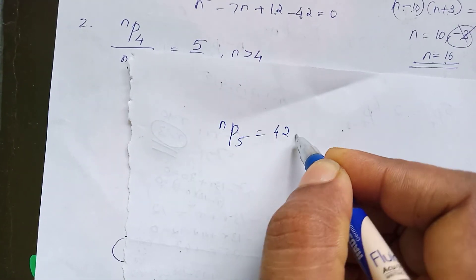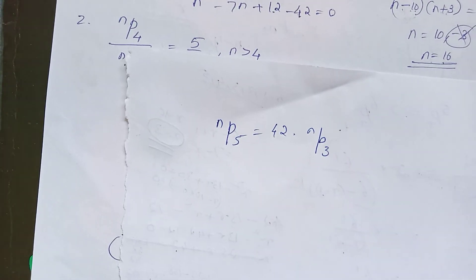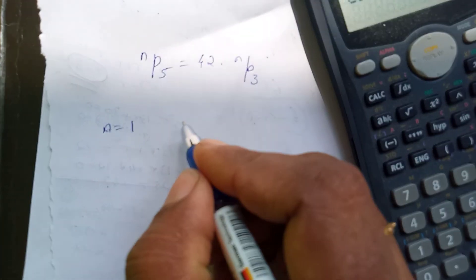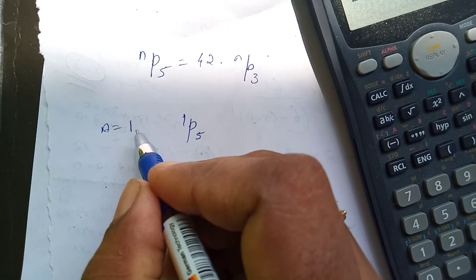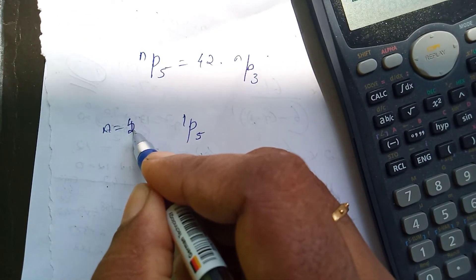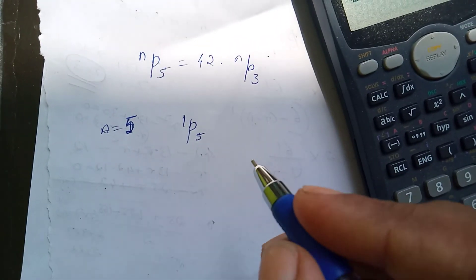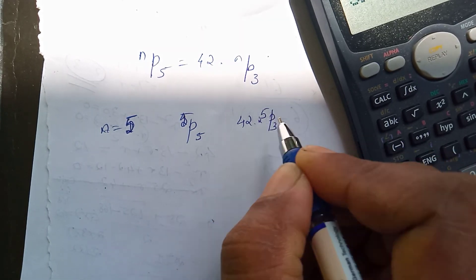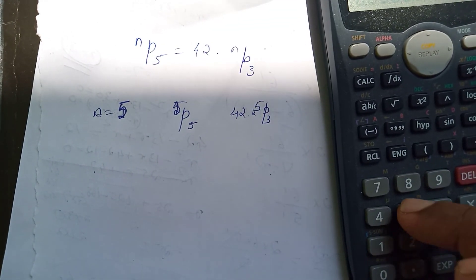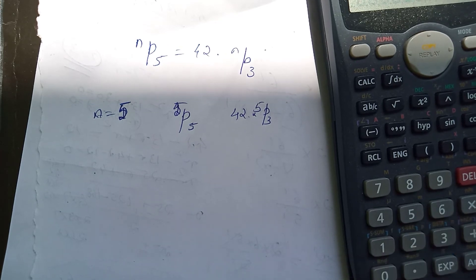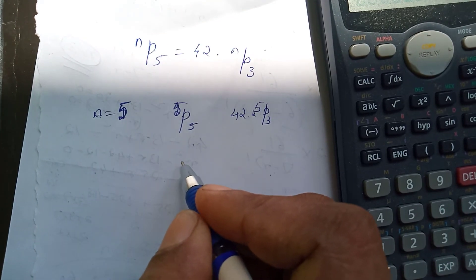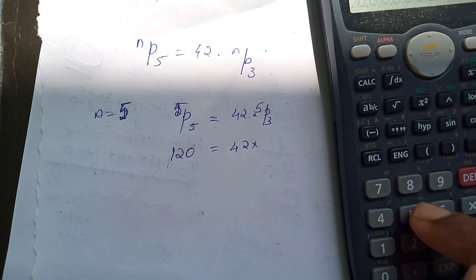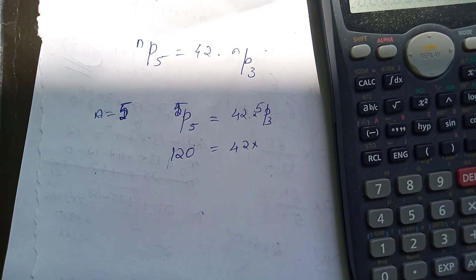nP5 equals 42 into nP3. If n equals 1, following the calculator, we will not get 1. So we remove that. Testing 5P5 equals 42 times 5P3: 5P5 is equal to 120, and 5P3 is equal to 60. So 42 times 2 equals 120, which is correct.